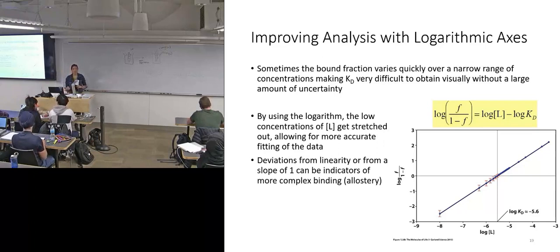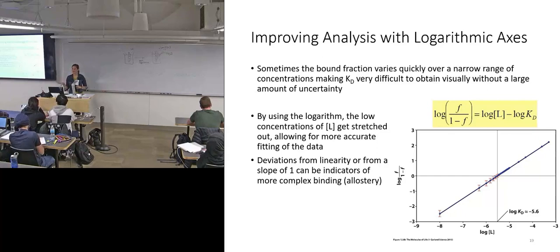Any deviation from linearity, so before we had a hyperbolic relationship that we were looking for. Now, if we have any deviation from linearity on our log-log plot, that will be our indication of more complex binding or of allostery.